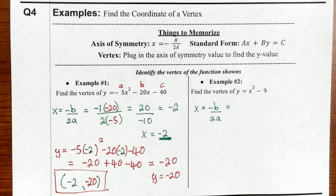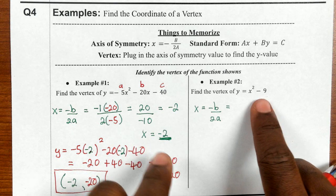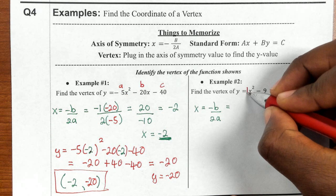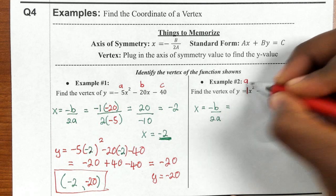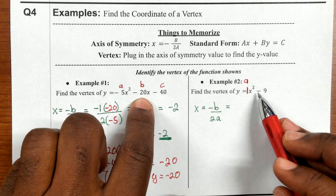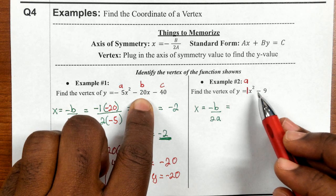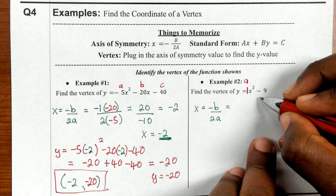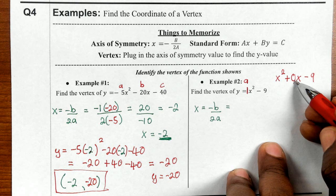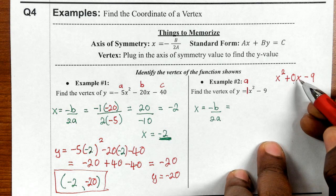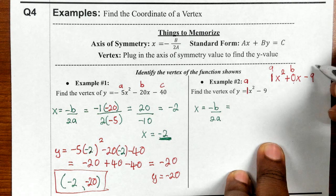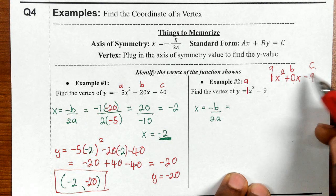You're wondering what a, b, and c are because this equation looks different. Technically, there is a 1 in front of x squared — that is your a. The x term is missing, so I'll put 0x as a placeholder. So a is 1, b is 0, and c is negative 9. Pay attention to that.